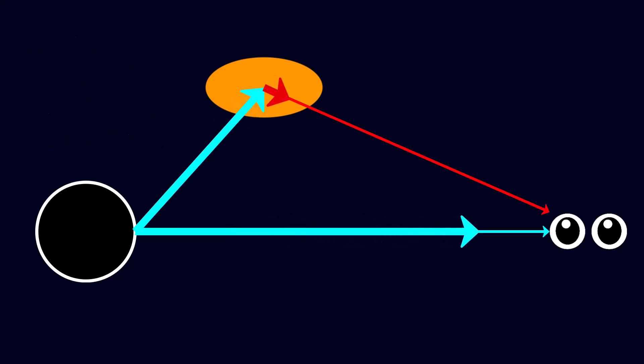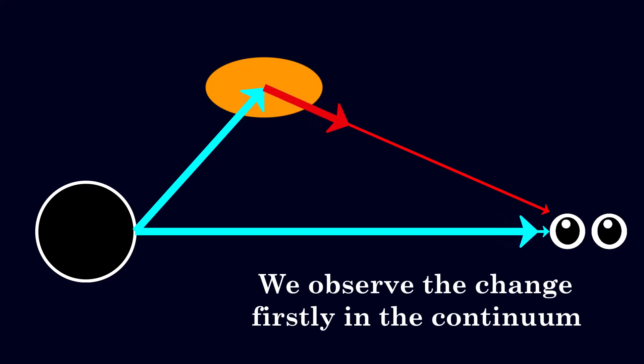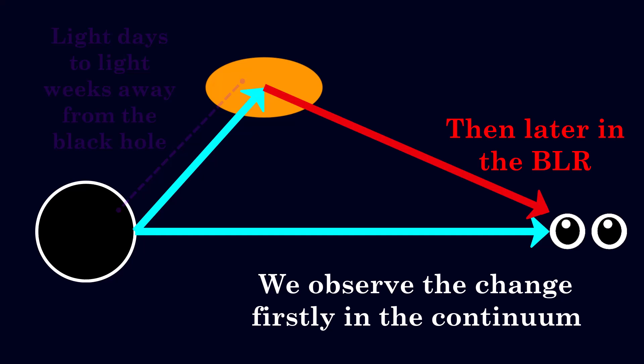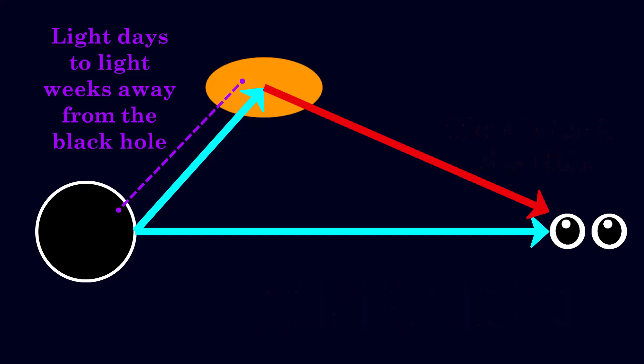However, there is a time delay in when we see the change in the reprocessed emission from the broad line region, since the light has to travel to the broad line region and get absorbed and then re-emitted. These broad line regions typically lie several light days to light weeks from the central supermassive black hole, depending on the luminosity of the AGN, hence why there is a detectable time delay in the change we see.